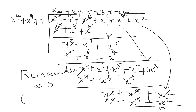A remainder of zero means no error. To test error detection, change a bit in the code word — for example, flip the third bit — then redo the decoding. You will not get zero, which indicates there is an error. This is the simple CRC polynomial problem. I will share the notes also. Thank you.